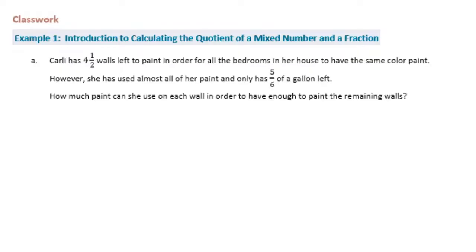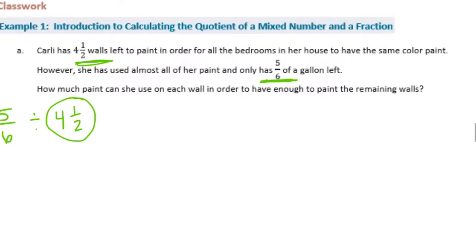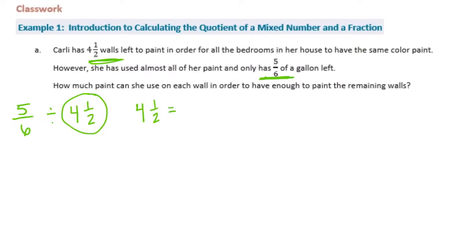So first of all we need to write the expression. She has four and a half walls left to paint and she only has five-sixths of a gallon left. So how much could she use on each wall? We're taking the five-sixths of a gallon that's left and dividing it between the four and a half walls. We're going to use the invert and multiply rule. But before we do that, we need to make four and a half into an improper fraction. We multiply the whole number by the denominator: four times two is eight, plus the numerator is nine-halves.